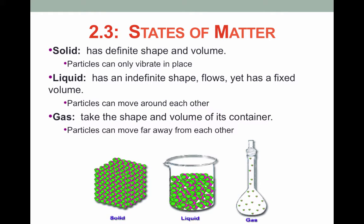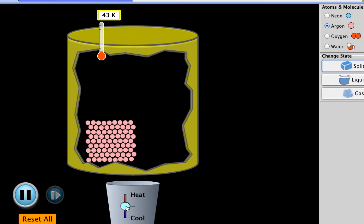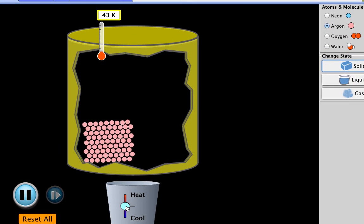And finally, gases will take up the entire shape and volume of their container. Because of the weak attraction between the gas particles, the particles move far away from each other. Therefore, they'll take up both the shape and the volume of their container. Looking again at our particle simulation of a solid, let's take a look at what happens as we increase the thermal energy of the solid.